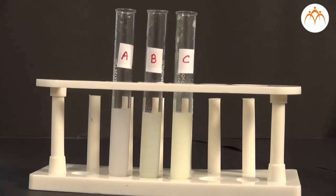In test tube A, the precipitate formed is white in color. In test tube B, the precipitate formed is light yellow in color. In test tube C, the precipitate formed is dark yellow in color.